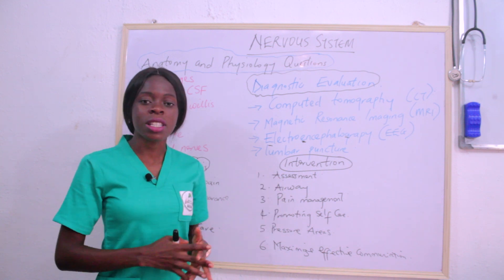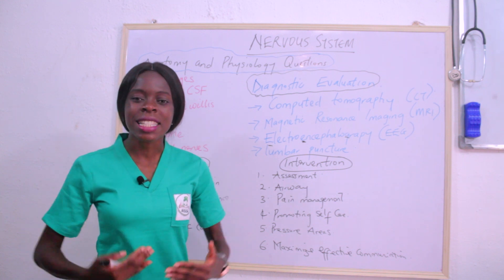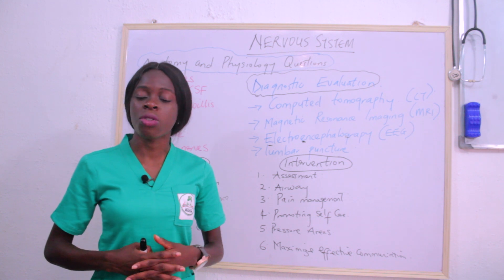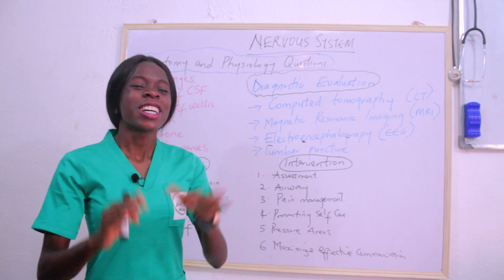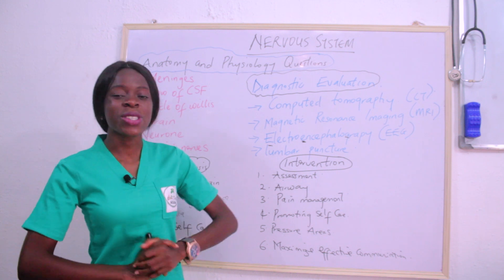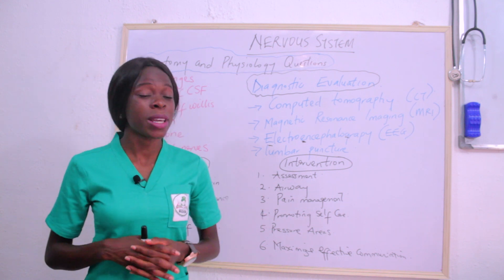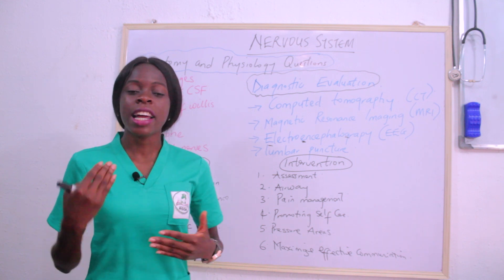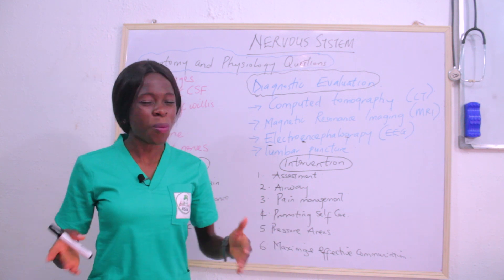In terms of the nervous system, neurological assessment is very important. Assessing the level of consciousness is critical, and this is done using the Glasgow Coma Scale. So assessment is the first priority. Next, you need to address airway clearance — breathing is essential, and you must ensure the patient is breathing and clear their airway.